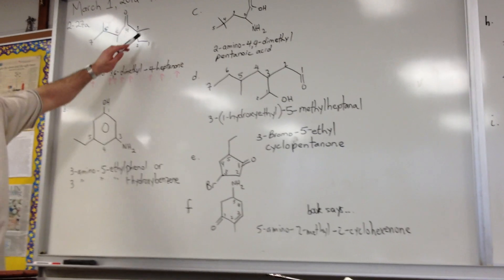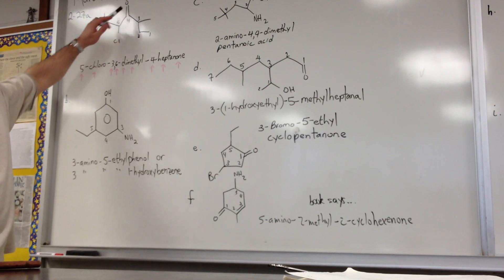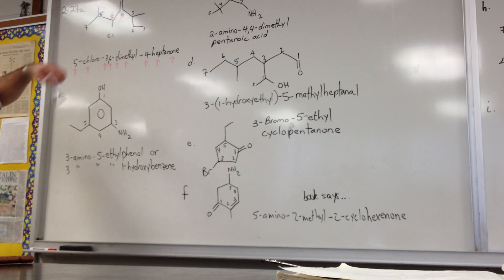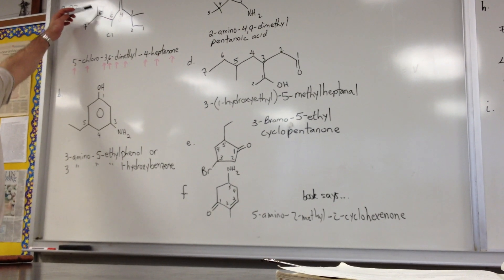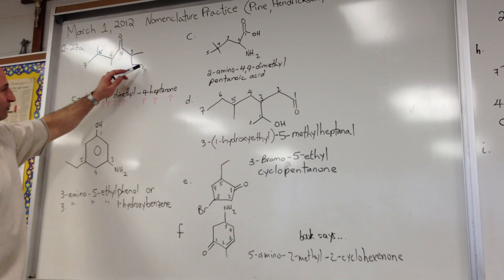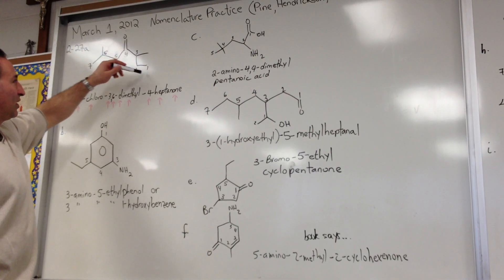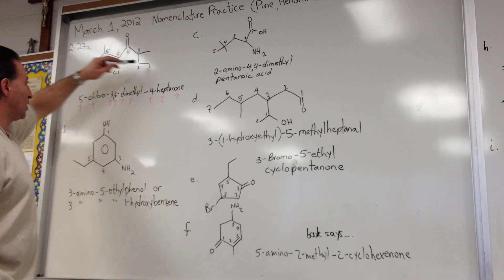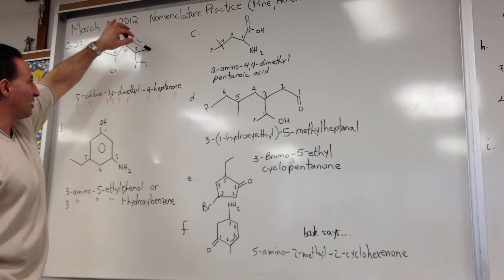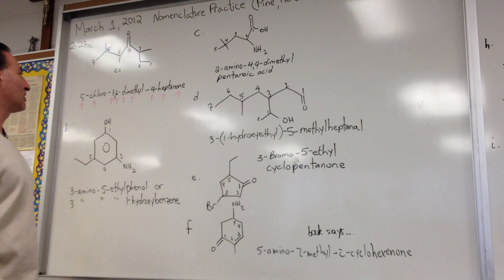This molecule, the longest chain is seven carbons long. It's got a ketone group in it, and it has a chlorine substituent and a methyl substituent and another methyl substituent. Notice how I started the numbering here. Even though the chain wasn't straight, I recognized the longest chain. It would have been tempting to start here because it's the straight chain, but sometimes you have to go around the corner to find the longest chain.